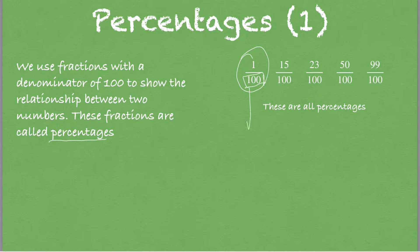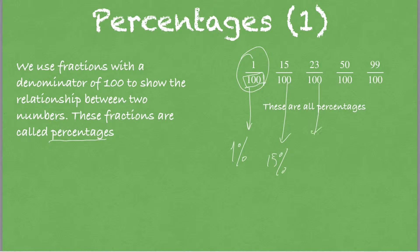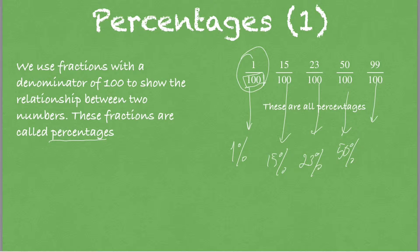If we want to write percentages in short form, we write 1%, 15%, 23%, 50%, and 99% — because 50 out of 100 is 50% and 99 out of 100 is 99%.